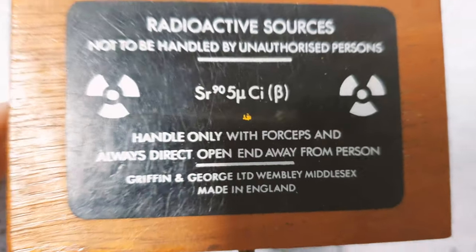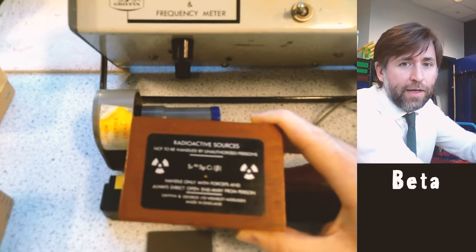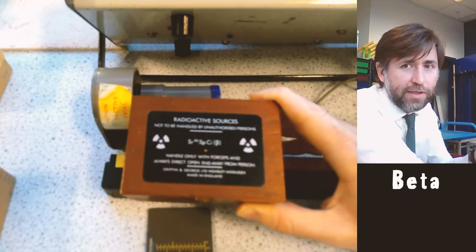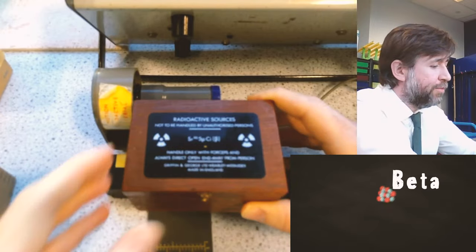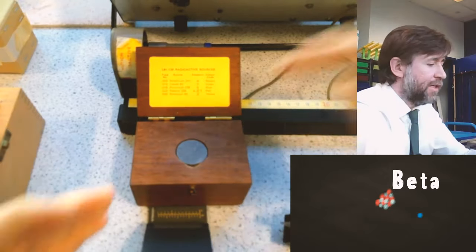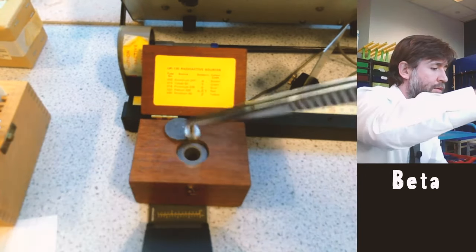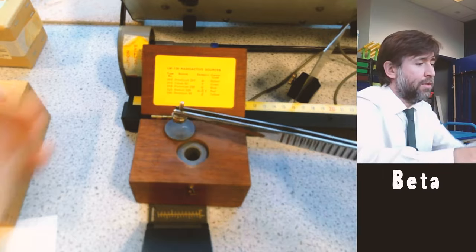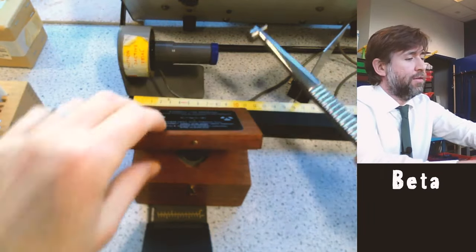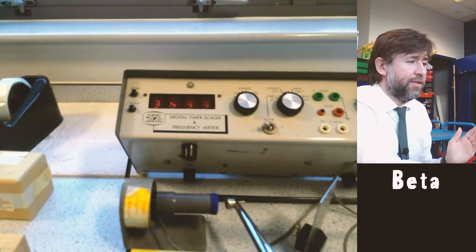And in this one I have strontium, this is strontium 90, that's the isotope, and the strontium is a beta emitter. You can see when I open this up, it's in a lead lined pot. Now when I show that to the Geiger Muller tube you can see that's an incredibly active source.